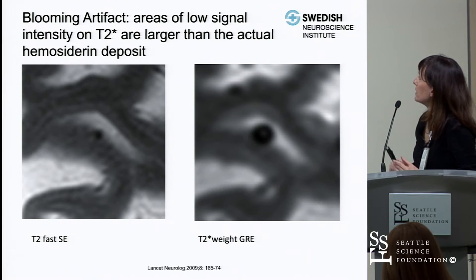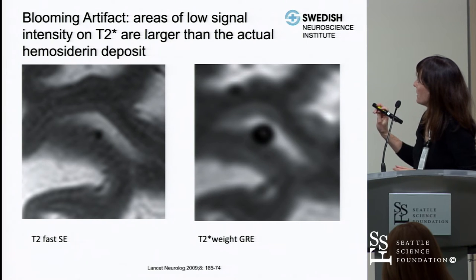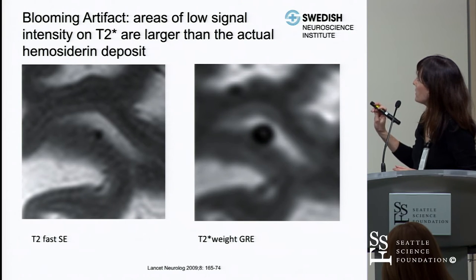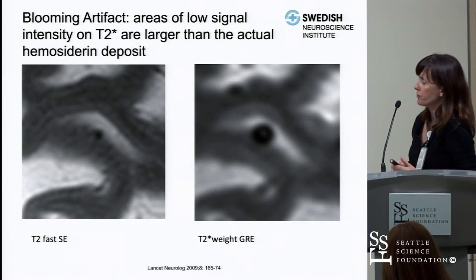Also visible on this image: looking at this microbleed, about 50% of it is surrounded by brain parenchyma, which is one of the identifying criteria you want to confirm.